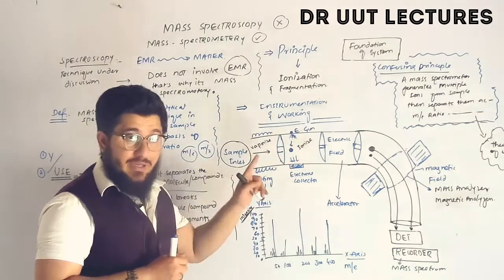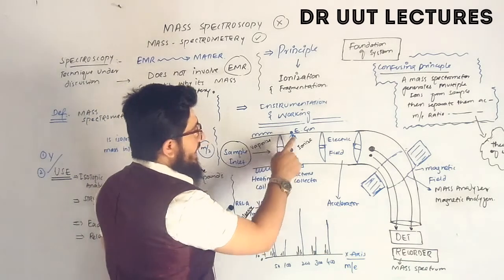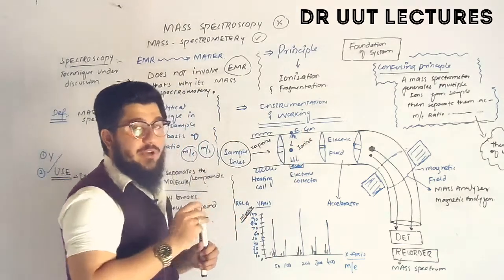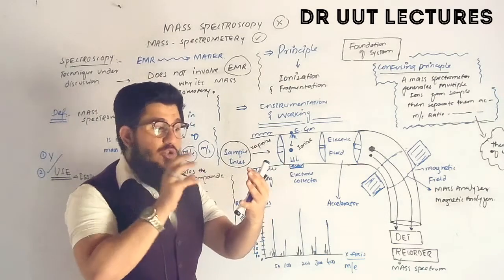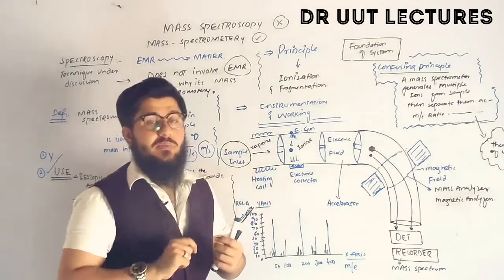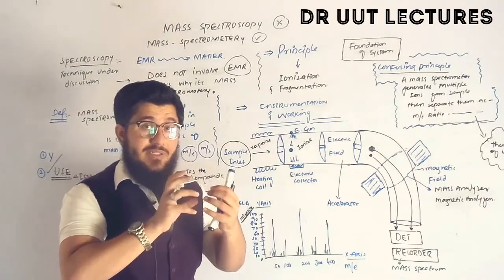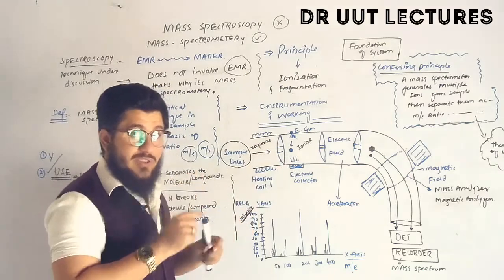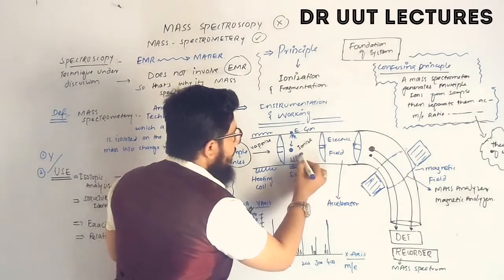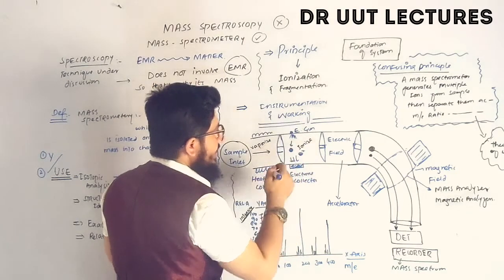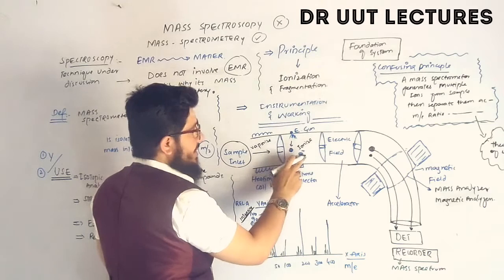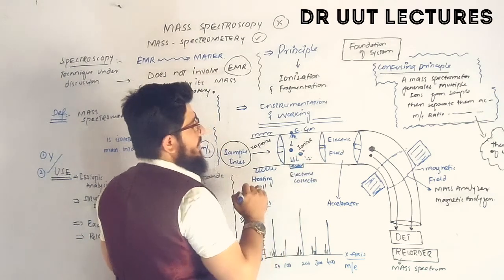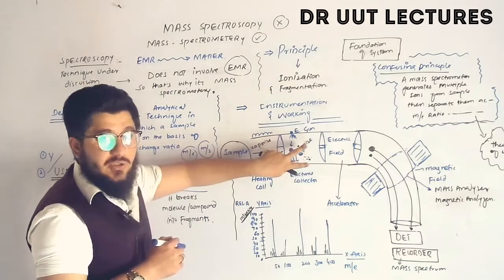The sample enters the ionization chamber, where ionization occurs. An electron gun fires electrons at the sample, knocking electrons out of it. When an electron is removed from an element, a positive charge appears on that element. So the sample becomes positively ionized, and it may also split into several fragments — giving us ionization and fragmentation.